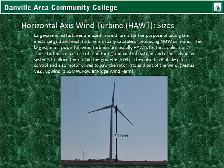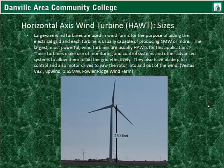Large size wind turbines are used in wind farms to aid the electrical grid, and each turbine is usually capable of producing one million watts — one megawatt or more. The largest, most powerful wind turbines are usually horizontal axis wind turbines. They make use of monitoring, control systems, blade pitch control, and motor drives to yaw the rotor into and out of the wind. The model shown is a Vestas V82 upwind type at 1.65 megawatts, located at the Fowler Ridge Wind Farm in Indiana, with a height of 260 feet.